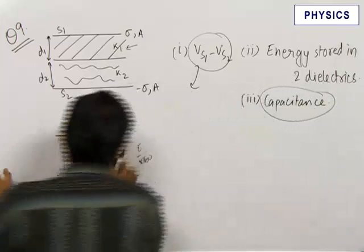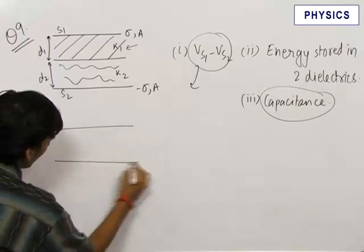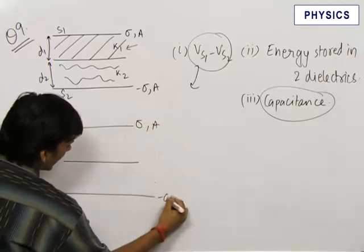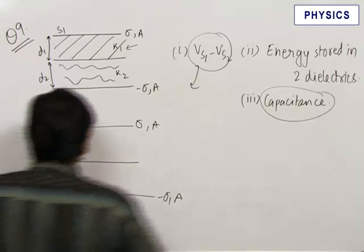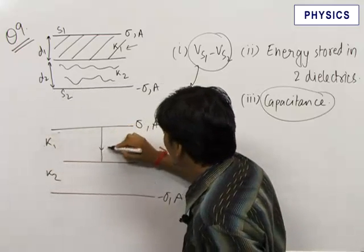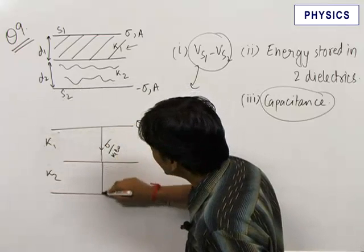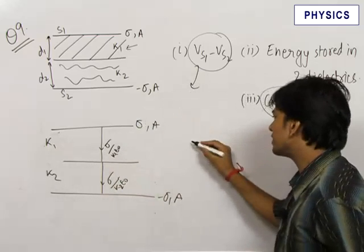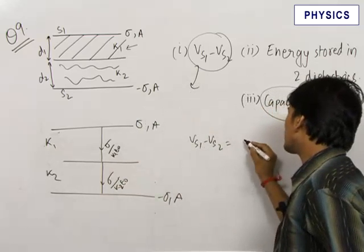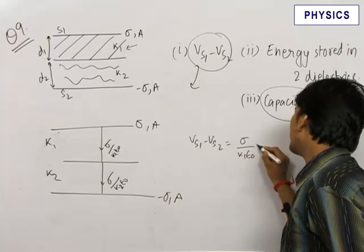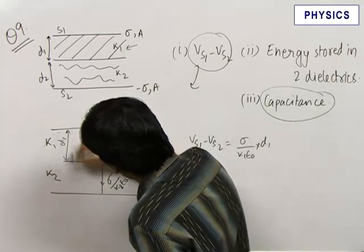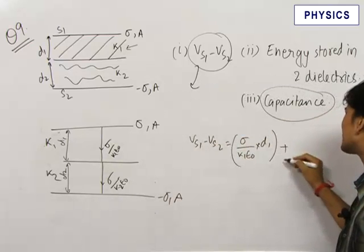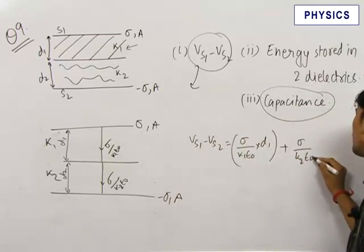Applying this logic to the given question: in the region of dielectric k1, the electric field is sigma upon k1·epsilon_0, and in the region of dielectric k2, the electric field is sigma upon k2·epsilon_0. Therefore, the potential difference V_s1 minus V_s2 equals sigma/(k1·epsilon_0) times d1, plus sigma/(k2·epsilon_0) times d2, since the distance in region 1 is d1 and in region 2 is d2.